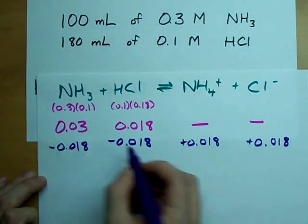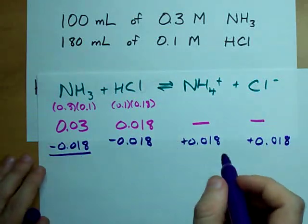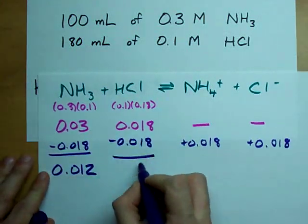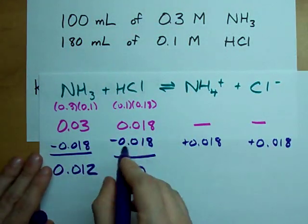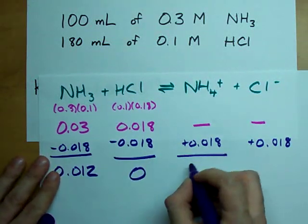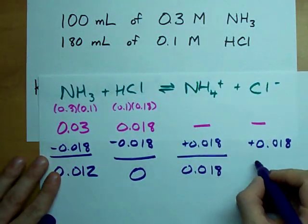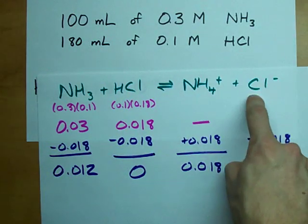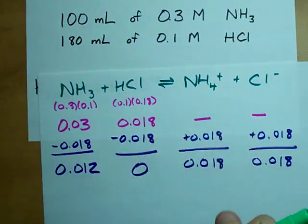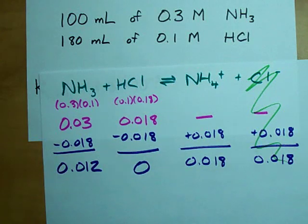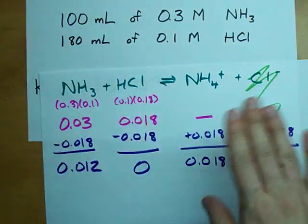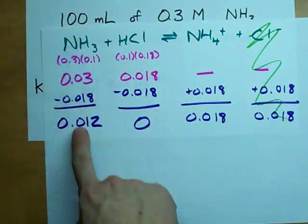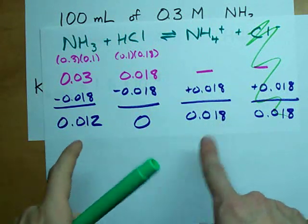Now that I have my change in moles, I can get my final numbers of moles after the reaction happens. It turns out I have 0.012 moles of NH3 left. I have none of the HCl left, because I rigged the question so that it would be used up. I produced 0.018 moles of ammonium, and 0.018 moles of chloride. Chloride is the conjugate base of a strong acid, so it won't affect the pH at all — it's still in solution, but it won't affect the pH. What affects the pH of the final solution is leftover ammonia and ammonium, and the equilibrium between those two.